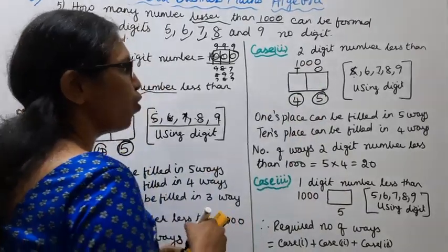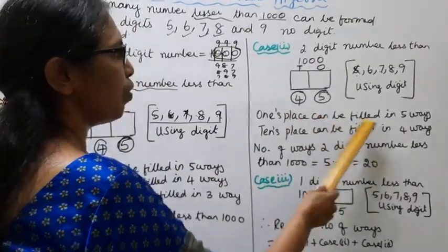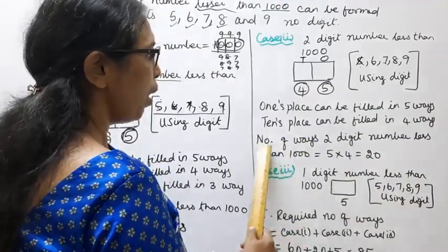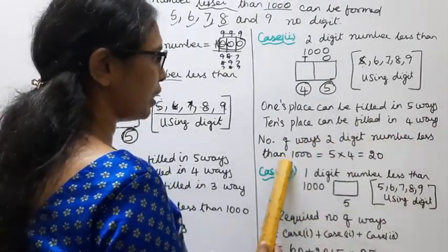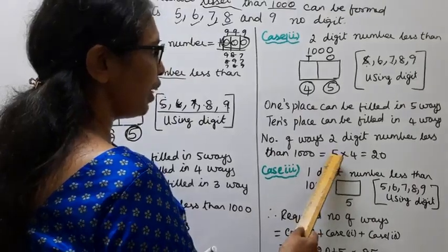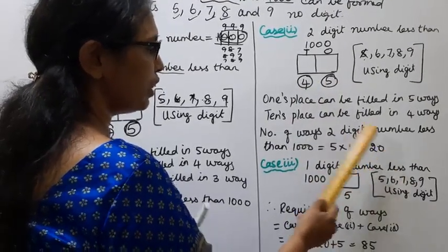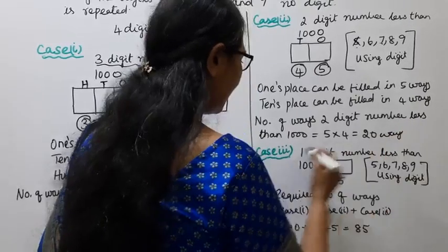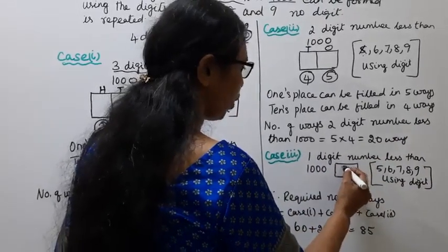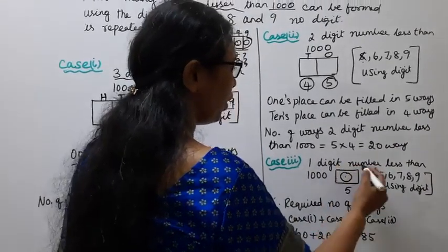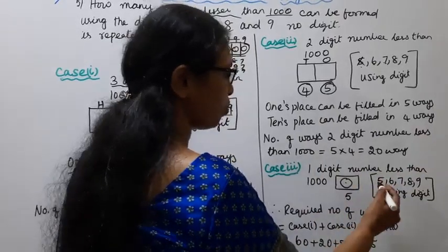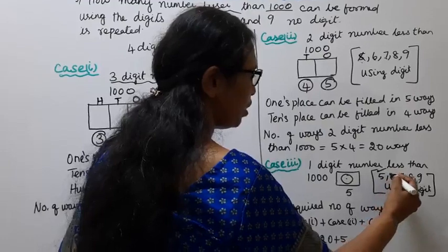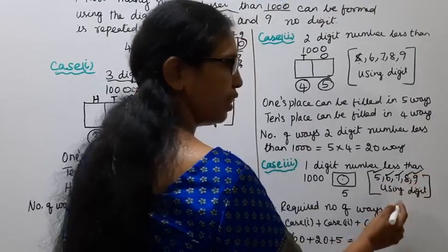Case 2: 2-digit numbers less than 1000. The 1s place can be filled in 5 ways, the 10s place can be filled in 4 ways. Number of ways for 2-digit numbers = 5 × 4 = 20 ways. Case 3: 1-digit numbers less than 1000, using digits 5, 6, 7, 8, 9 — that is 5 ways.